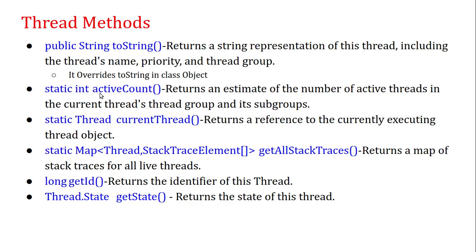static int activeCount() — this method returns an estimate of the number of active threads in the current thread's thread group and its subgroups. static Thread currentThread() — it returns a reference to the currently executing thread object.